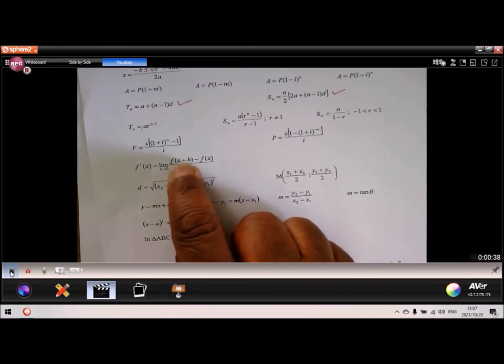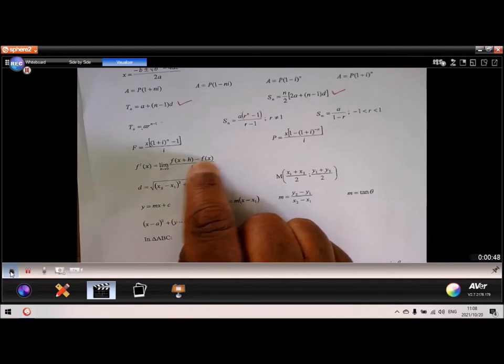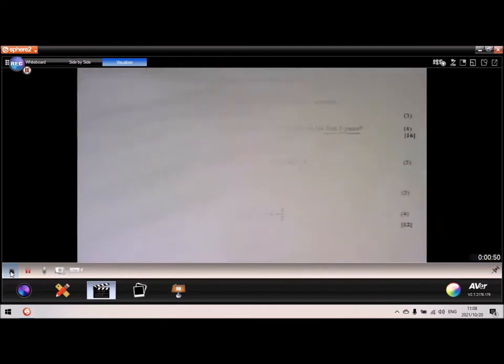Now take note that the f of x plus h minus the f of x must first be determined. So remember, x plus h must be substituted into the function and x, and you must subtract the two. So let's do that.